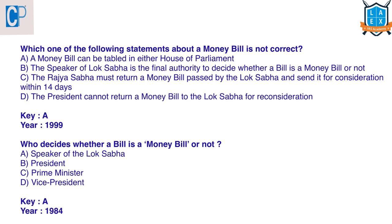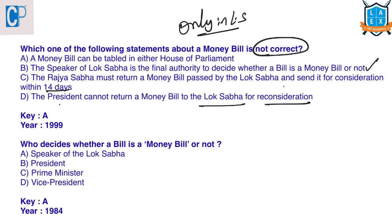Now let's go through previous year prelims questions on money bills. Question: which statement about a money bill is not correct? A money bill cannot be tabled in either house of parliament — the Speaker of Lok Sabha is the final authority — Rajya Sabha must return a money bill passed by Lok Sabha within 14 days — the President cannot return a money bill to Lok Sabha for reconsideration. This money bill can be introduced or originated only in Lok Sabha — not in either house of parliament.